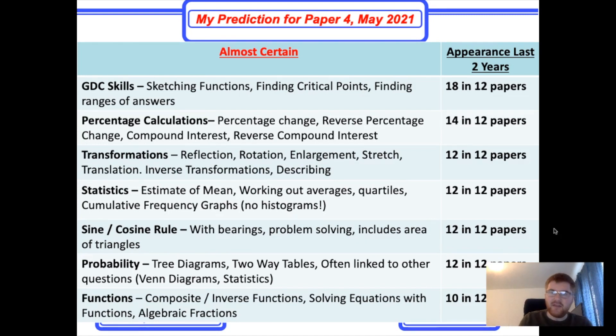Also I've noticed they put on inverse transformations. They'll give you a transformation and without any graphs, you need to think how do I work backwards to get to the original shape. So if you enlarge by scale factor two, then to go back you need to enlarge by scale factor a half, for example.